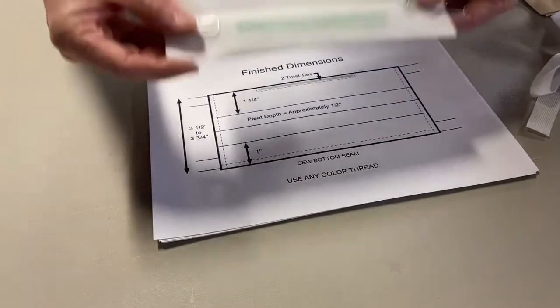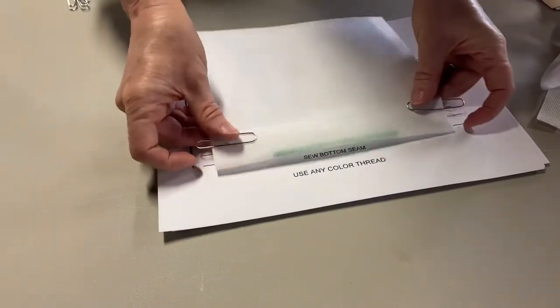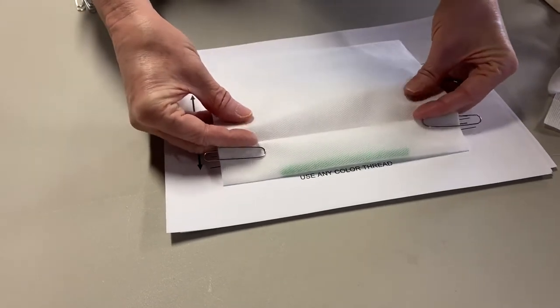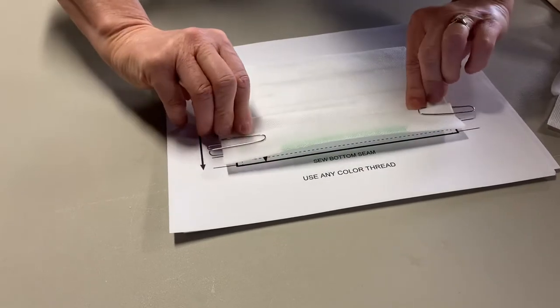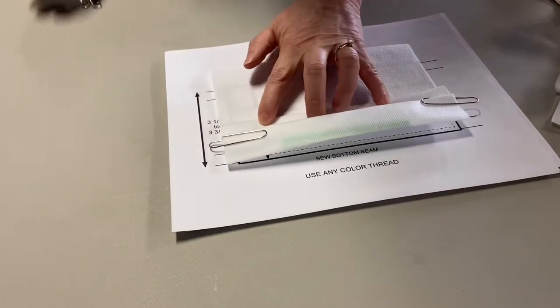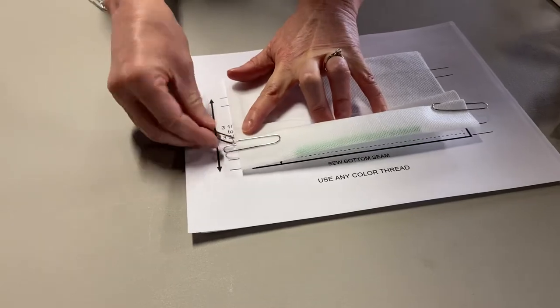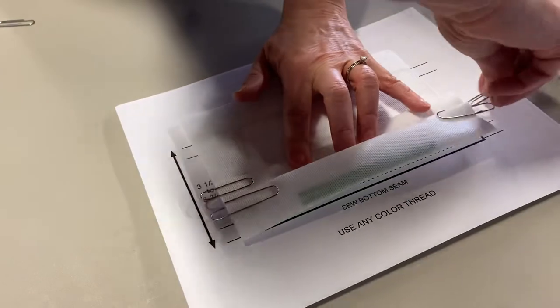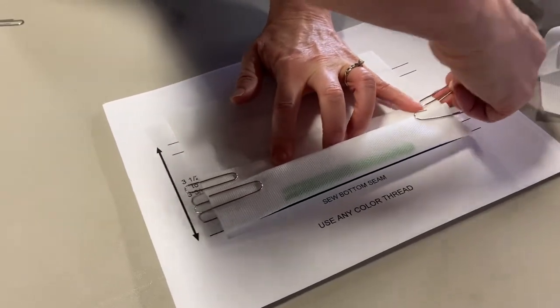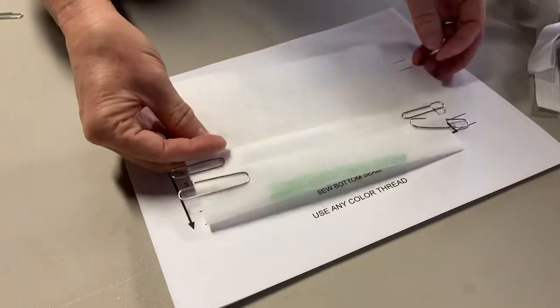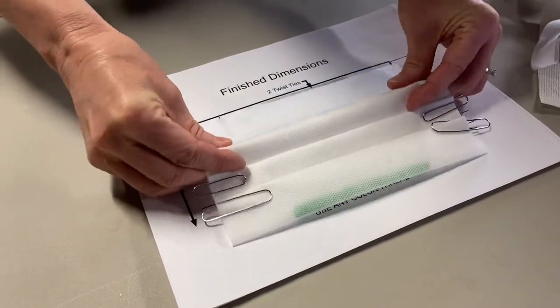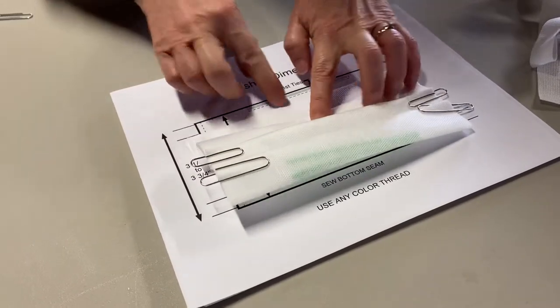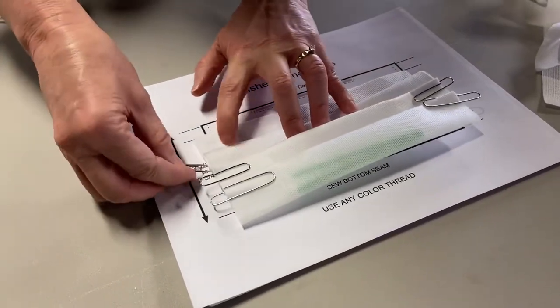Then what I do is flip it over and I put my fingers right here and I make a half inch fold and just come right down and again use two paper clips to hold the fabric. And then I just have my last fold that I take down and I want to make sure that from the bottom of this last fold to the bottom is approximately one inch.